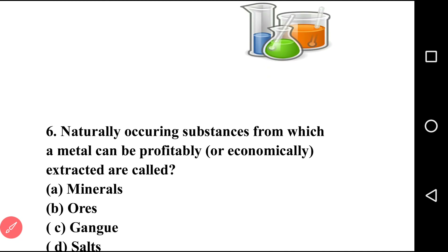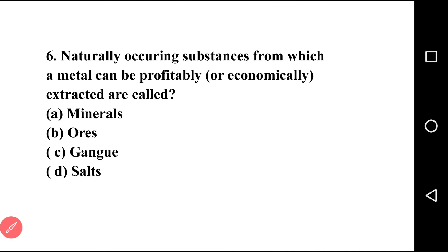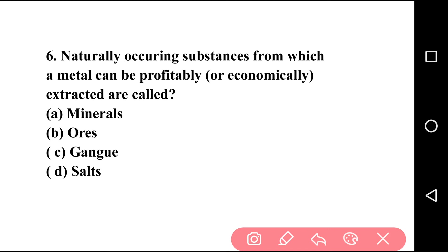Going to next question, that is question number six: a naturally occurring substance from which a metal can be profitably or economically extracted is called? There are four options: mineral, ore, gangue, salt. The right answer is option B, that is ore. When a naturally occurring substance or mineral is extracted profitably, it is called ore.